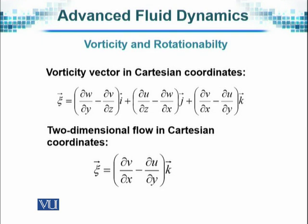If we want to calculate vorticity in Cartesian rectangular coordinates — that is x, y, z, where i, j, k are unit vectors in the x, y, z directions respectively — then zeta, the vorticity vector, is calculated using partial derivatives: the partial derivative of w with respect to y minus the partial derivative of v with respect to z. That will be the component of vorticity in the x direction.